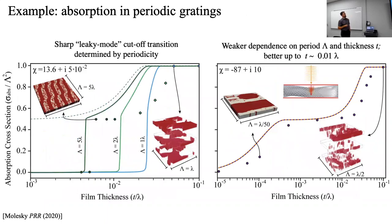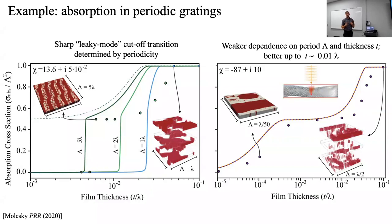A similar example for absorption of periodic gratings shows the bounds track well with inverse design and predict very rapid transitions for the appearance of leaky modes determined by periodicity—very useful for setting up what parameters are needed in inverse design to achieve target component performance.